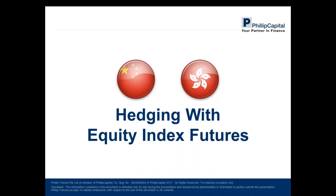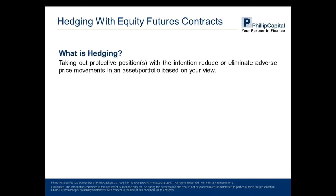Let's talk about hedging with equity index futures. Besides speculation, you can use futures to hedge against your own portfolio of stocks. For stock investors with a big basket of Chinese or Hong Kong stocks, you can use futures contracts to hedge against adverse moves in your portfolio. If you are bullish over a 1-2 year horizon but foresee a short-term downward correction you don't expect to last, you can use index futures to protect your portfolio for that period of time.